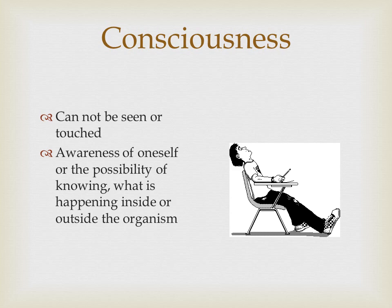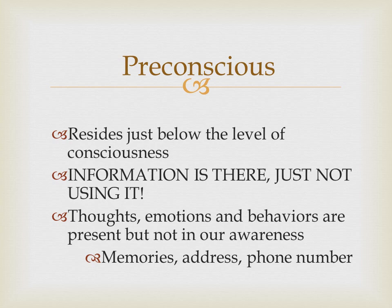The first thing we're going to talk about is consciousness. Consciousness can't be seen, it can't be touched — it's the awareness of oneself, or just knowing what is happening inside or outside of an organism. It is the state of being aware. Pre-conscious is the stuff right below the surface; it resides just below the level of consciousness. You have this information there, you're just not using it — thoughts, emotions, and behaviors that are present but not always in our current awareness. For example, your phone number or address: you're not always thinking of it, so it's just below the surface — that's pre-conscious.